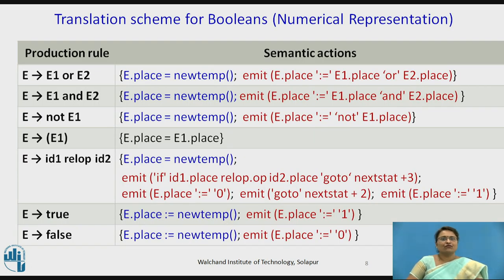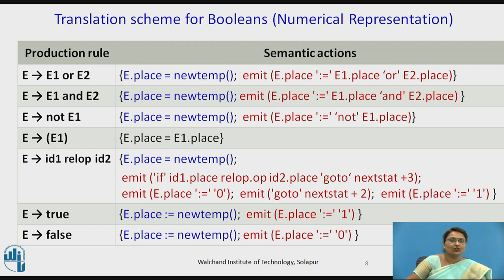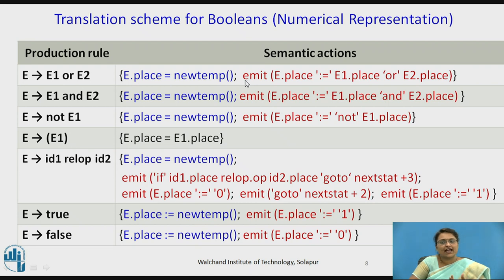This is the translation scheme for Boolean expressions in numerical representation form. The same grammar is shown with semantic actions — for each matching production, it specifies what action to take. Two key functions are used: the emit function, which generates 3-address code, and new temp, which generates a new temporary variable such as T1 or T2 each time one is needed. For the production E1 OR E2, the attribute E.place generates a temporary variable, and the emit function generates the corresponding 3-address code.